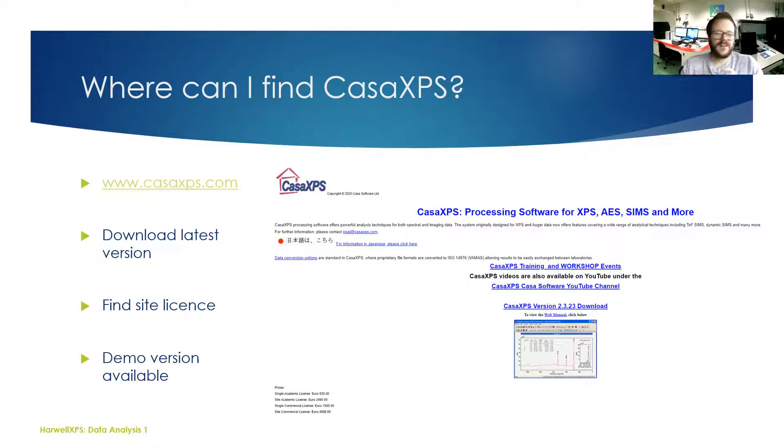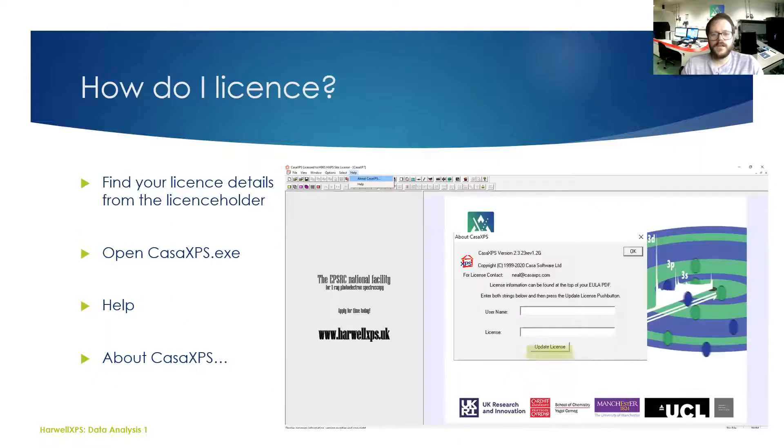You can also find out if you've got a site license, so if you are part of a university check out the links there to see if you are listed. You can also run this as a demo version. You can do lots of the processing, you just can't export or save anything. If you do have a license, you're going to need to license your software before you get started. Open up your CasaXPS.exe, click on the help option, then put in your license information.